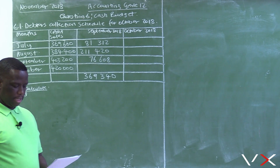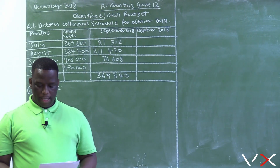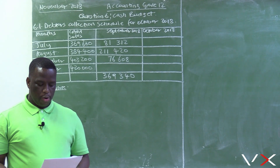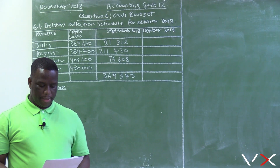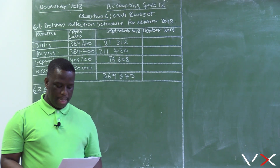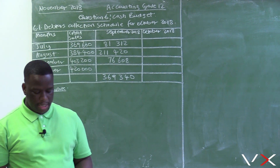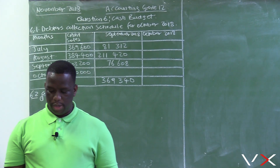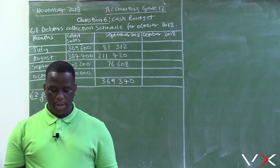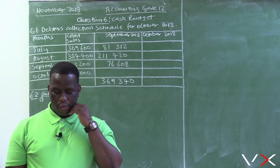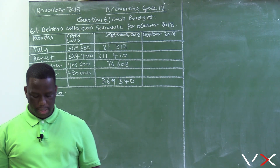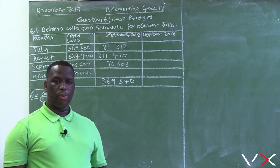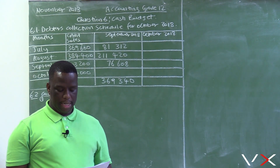This is Question 6, based on a cash budget. It states that Donald May owns Breezy Traders, which sells air conditioner units. The budget period ends on the 31st of October 2018. We are required in 6.1 to complete the data collection schedule for October 2018, for seven marks.